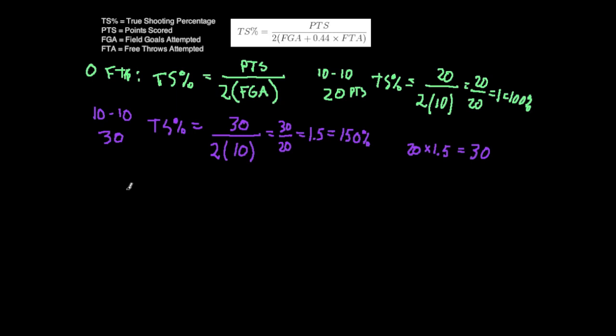Now taking into account free throws, and this is the part that was really tricky for me, especially this factor of 0.44. I think it's helpful to consider the case where we only shot free throws. So if a player has zero field goals attempted, the true shooting formula looks like points over 2 times 0.44 times free throws attempted.